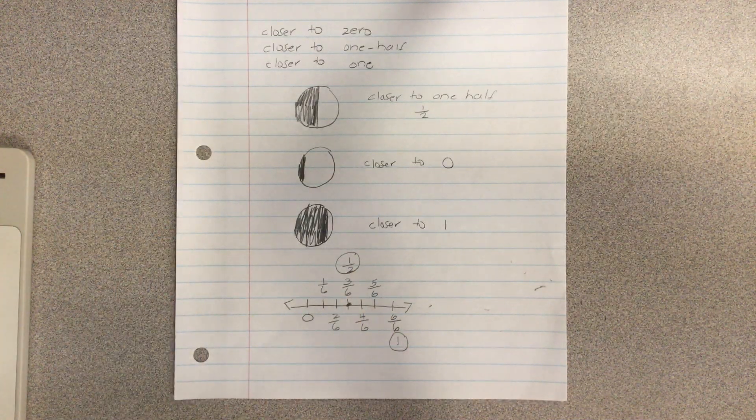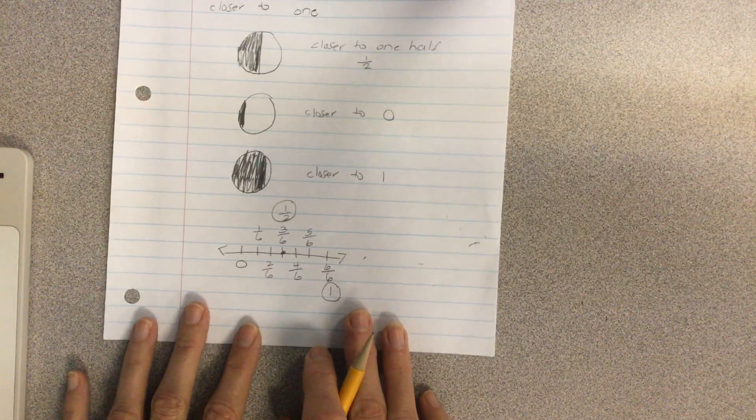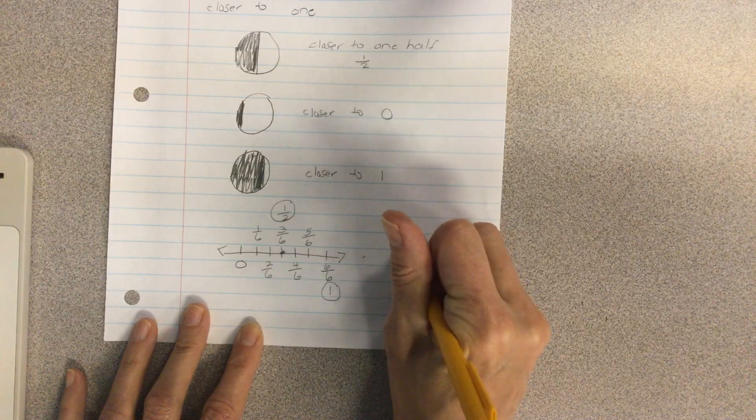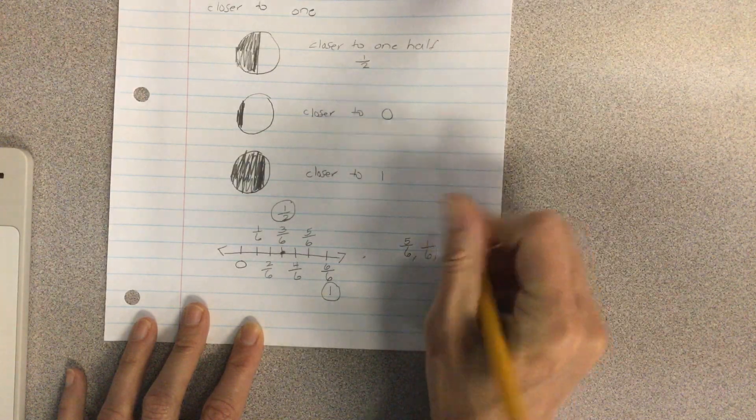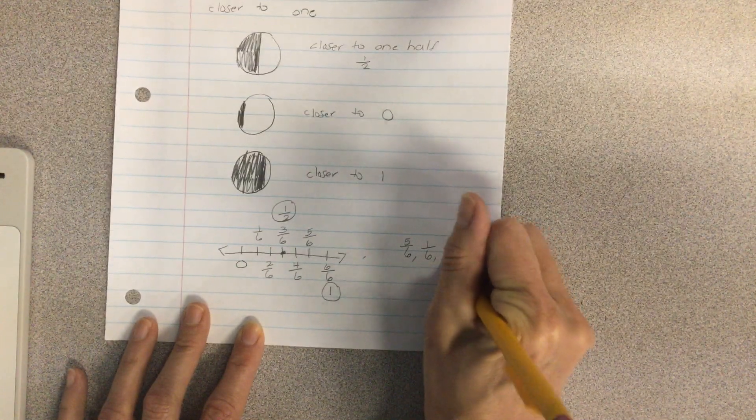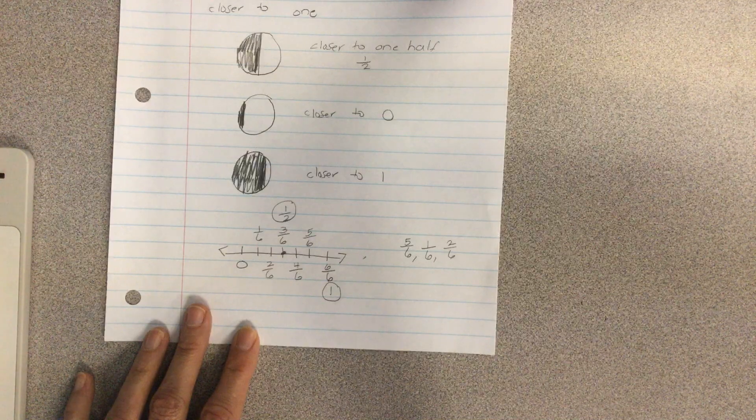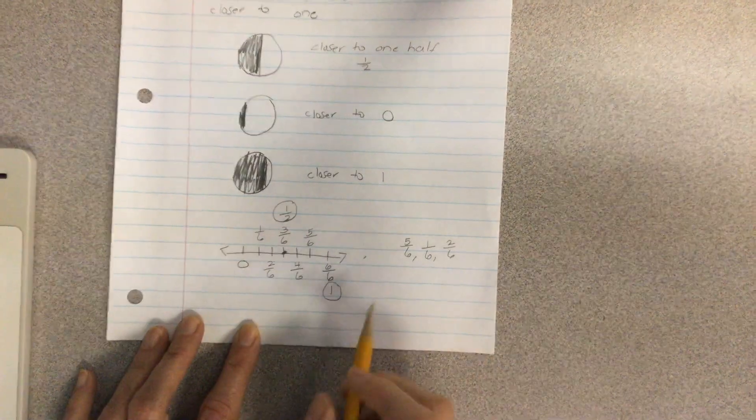So let's plot our coordinates. Let's plot some fractions on this number line. So let's see if we have the number five sixths, one sixth, and two sixths. And we're going to decide if those are closer to zero, closer to one half, or closer to one.